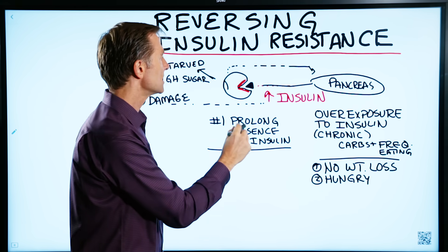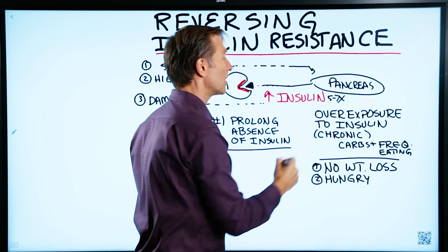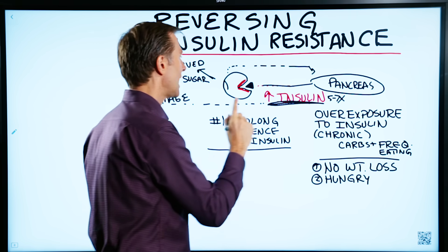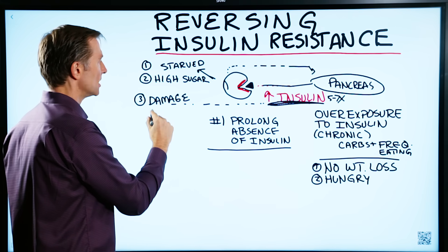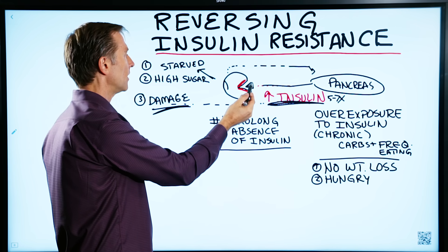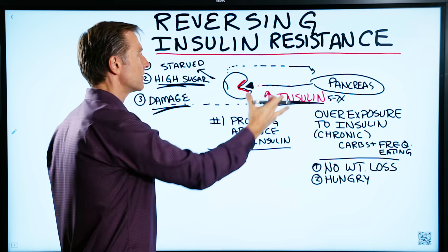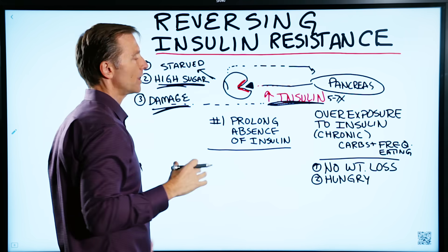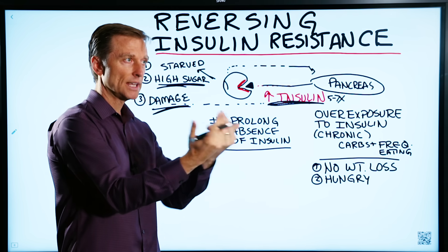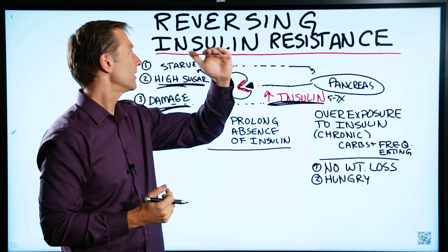An average person with insulin resistance has five to seven times more insulin than normal. The problem with this is that this high level of insulin creates damage in the body. Also, the fact that it's not getting into the body that well can raise your blood sugar. So you have high blood sugars because the purpose of insulin is to lower the blood sugar. We have this dynamic of the hormone trying to do its work but it can't, so it can't control the blood sugar — it can start going higher and higher.